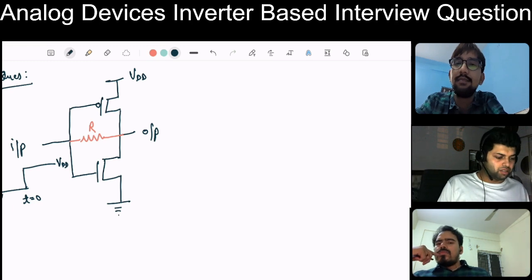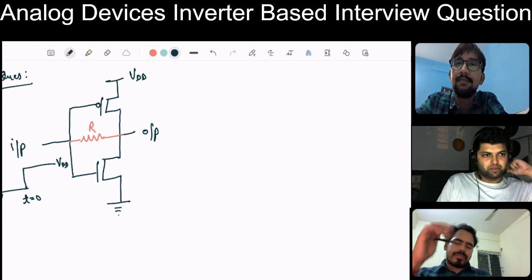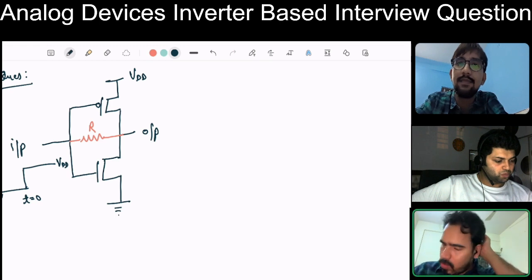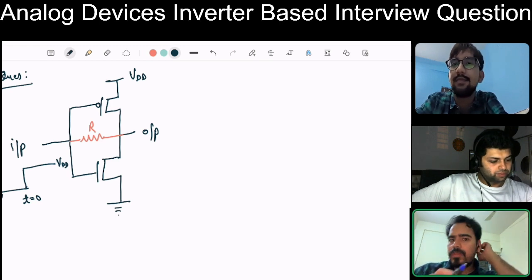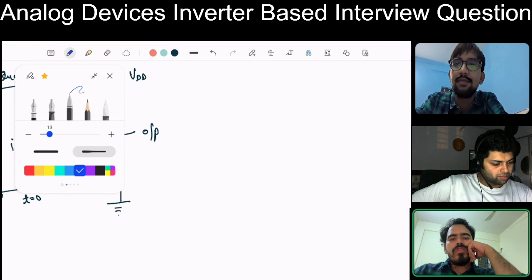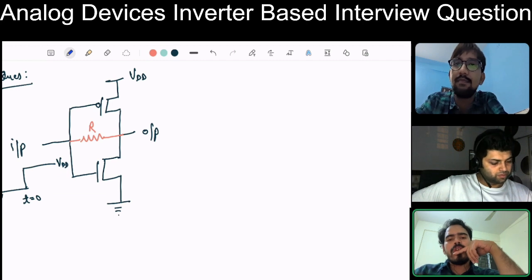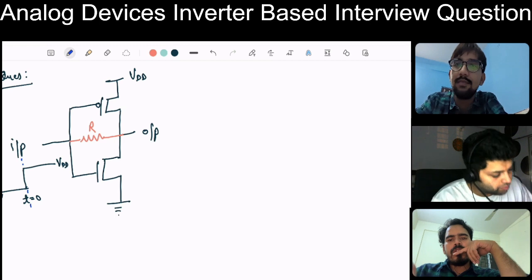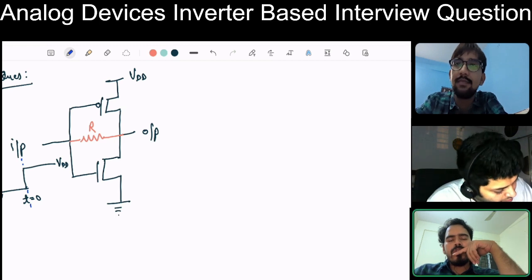We can start this way: there are basically two steps — before t equal to zero and after t equal to zero. So when the input is zero, before t equal to zero, if the input is zero, then the PMOS will be on and NMOS will be off.